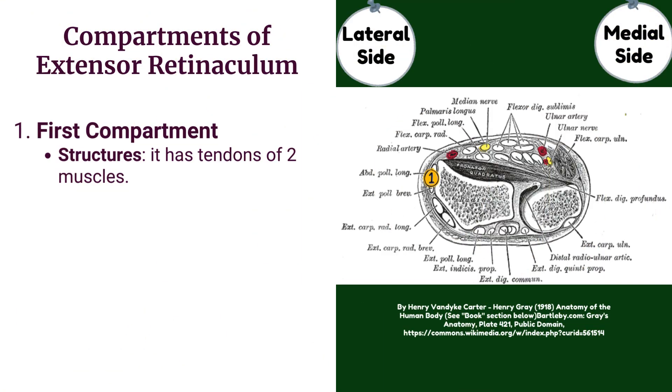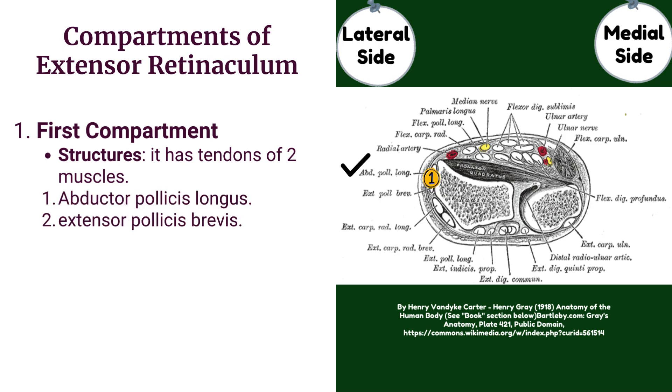The first compartment contains the tendons of two muscles: abductor pollicis longus and extensor pollicis brevis.